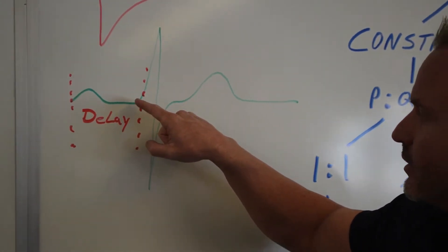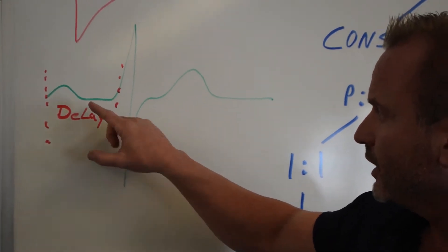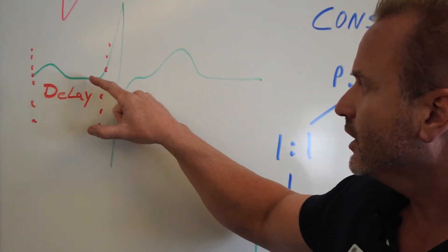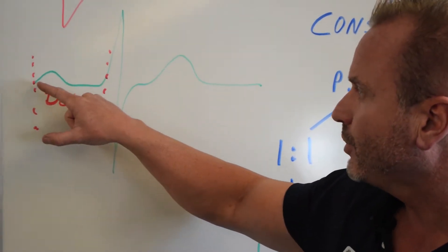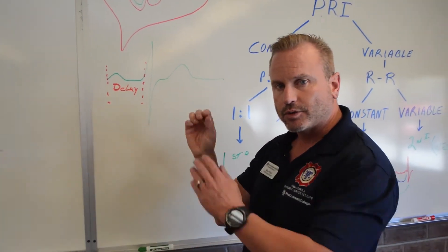You have to remember each little box is 0.04 milliseconds. So five of them would be 0.20. If there's a delay, if it's over one whole box wide, which this one would absolutely be, you can see that there's a conduction delay. So our P to our R interval is lengthened out. So it's a little bit slower.